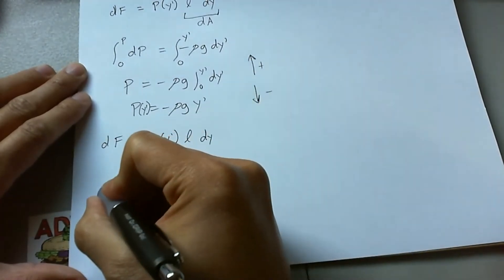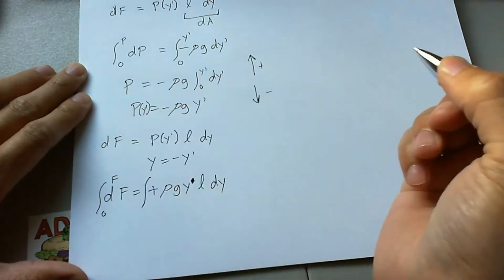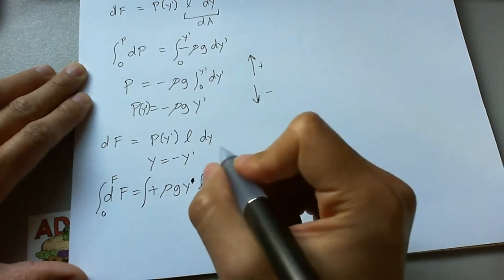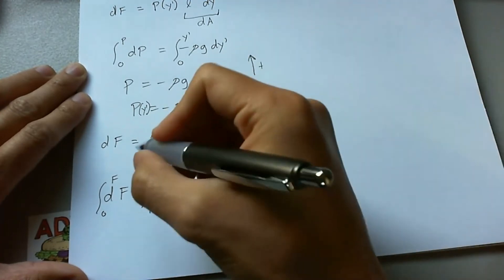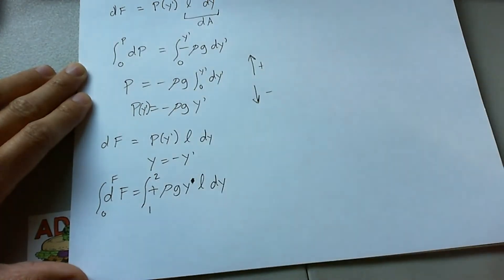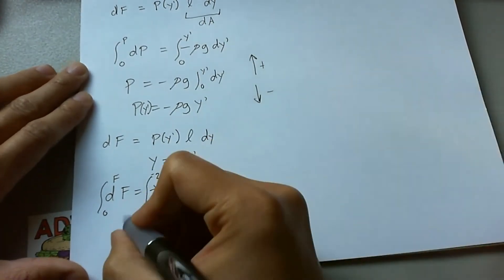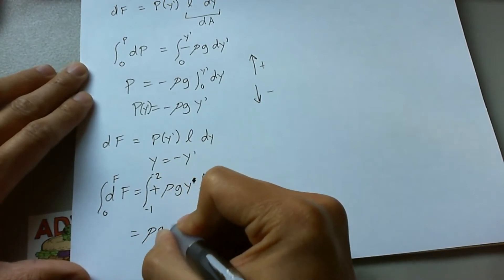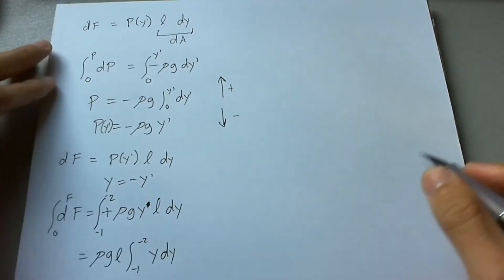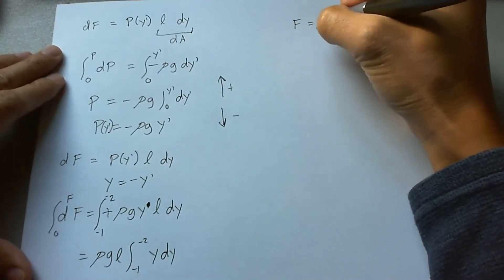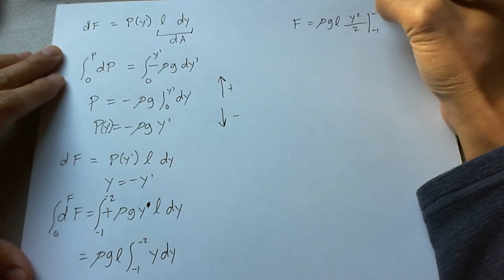So let's go ahead and take integration over all force. So from zero to F from a depth of, from an area from one meter below the surface of the water to two meters below the surface of the water. And it's going to be negative. So from here, we go ahead and take ρgL out, leaving only a function of y dy. So F = ρgL y²/2 from -1 to -2 depth.